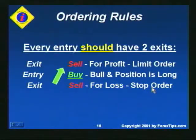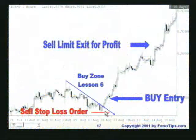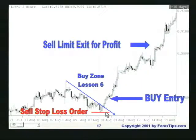Here are some additional ordering rules: every buy should have two sells. If you're buying, you're bullish and want the market to go up — you need a sell for profit and a sell for loss. On the chart, you should have a protective sell stop-loss order and a sell limit order for profit. Every buy should have two sells.